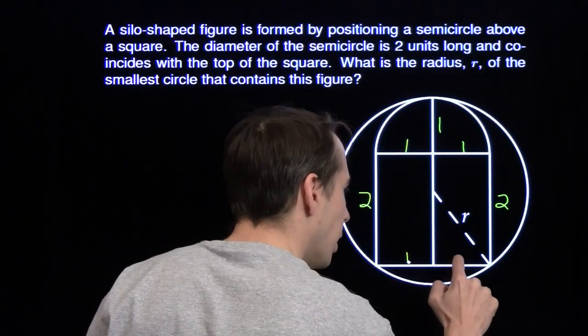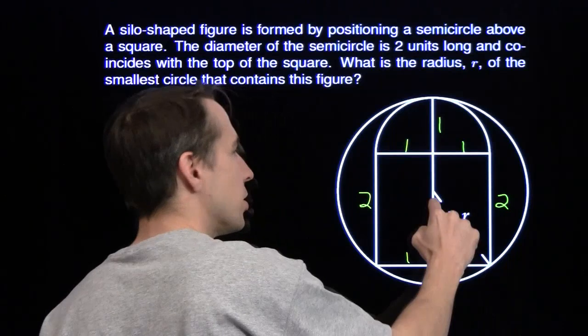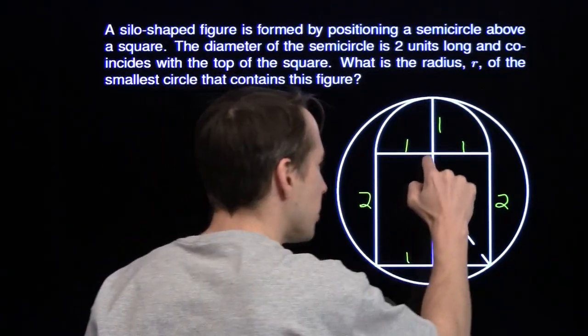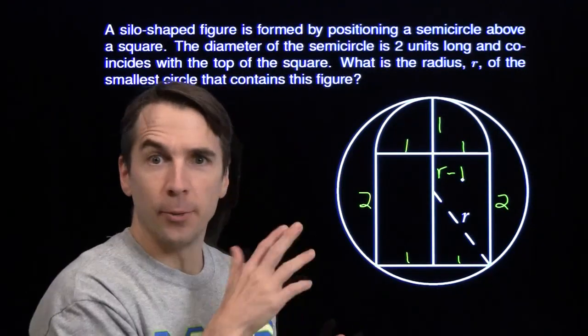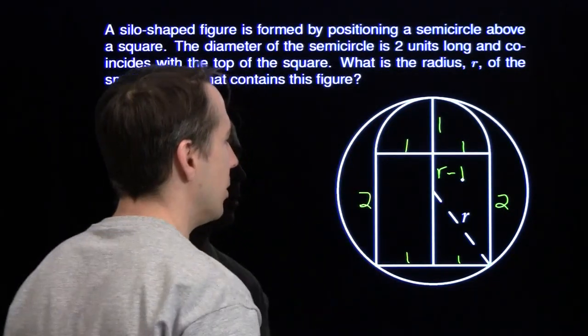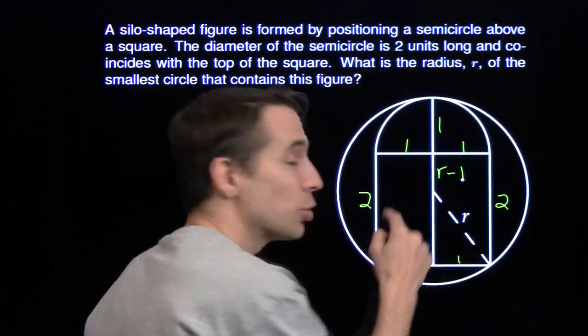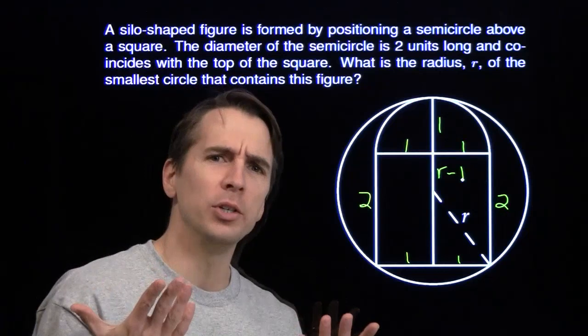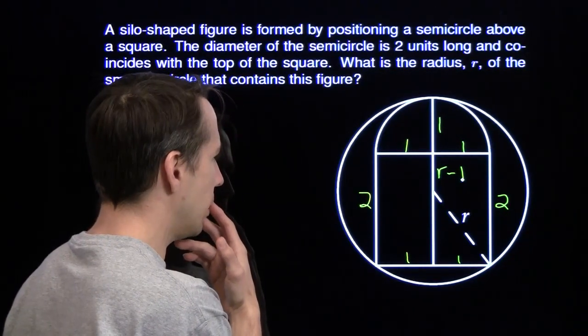These pieces down here, these are each 1. And if this whole thing, this radius is r, this whole thing will be r. That tells me this little piece right here is r minus 1. Don't be afraid to write all over your test. Label your diagrams. It allows you to see things. And what I see here is a right triangle. I want to use the Pythagorean theorem.